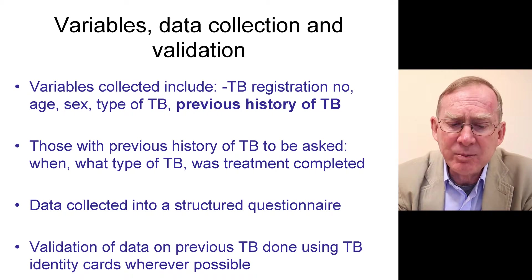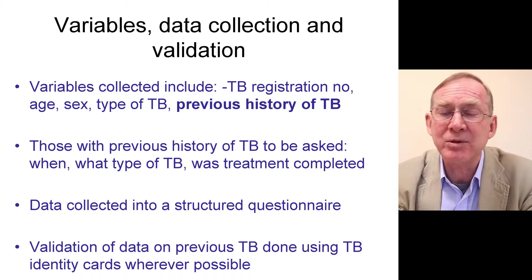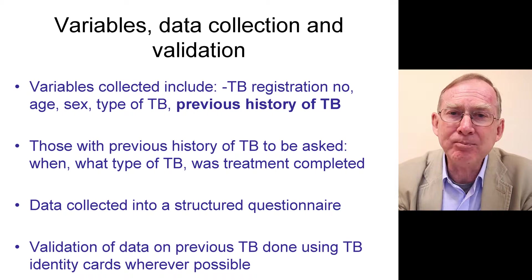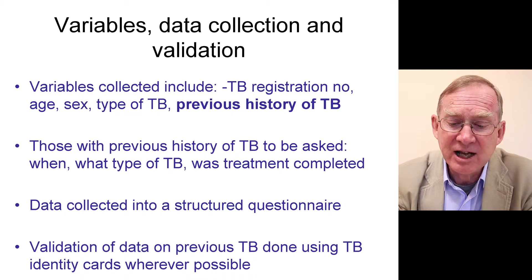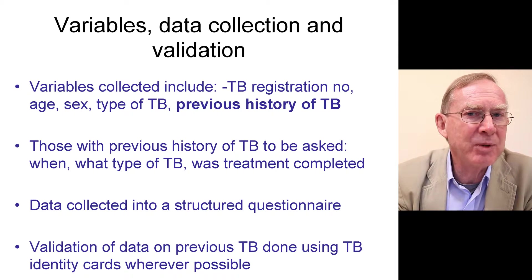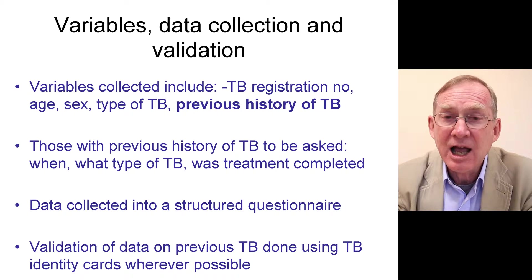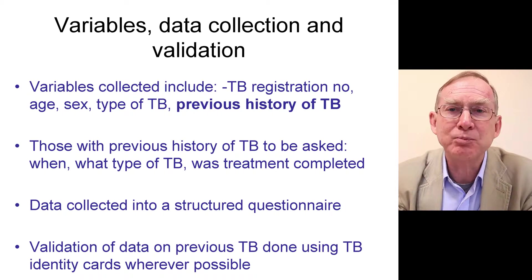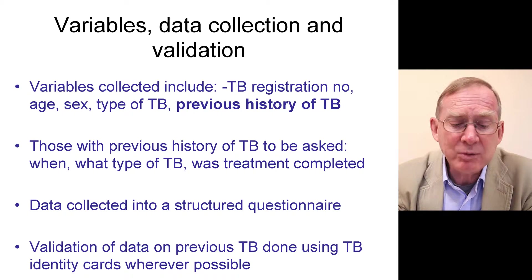Variables and data collection: the variables collected included TB registration number, age, sex, and type of TB — smear-positive pulmonary TB, smear-negative pulmonary TB, or extra-pulmonary TB. We asked the simple question: have you or have you not had previous tuberculosis? For those with a previous history, we asked when it was, what type of TB it was, and whether treatment was completed. The exposure variables are registration number, age, sex, and type of TB. The outcome variable is previous history of tuberculosis. Data were collected using a paper-based structured questionnaire, and we tried to validate data on previous TB using TB identity cards whenever possible.